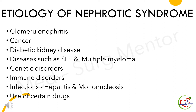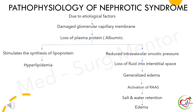Common etiologies of nephrotic syndrome are glomerulonephritis, cancer, diabetic kidney disease, diseases such as systemic lupus erythematosus and multiple myeloma, genetic disorders, immune disorders, infections such as hepatitis or mononucleosis, and use of certain drugs.